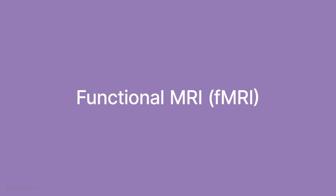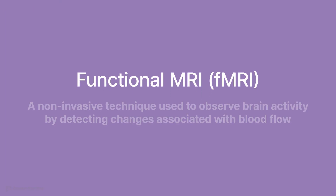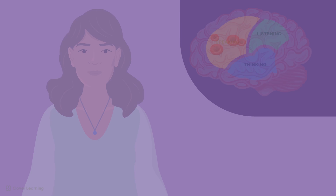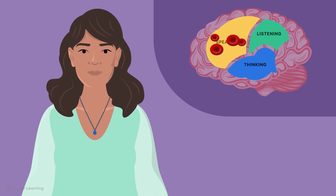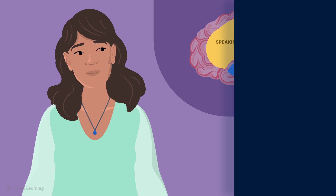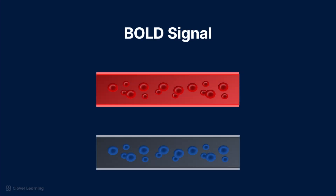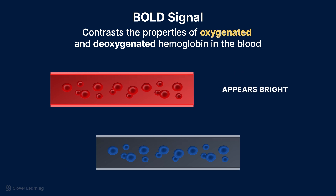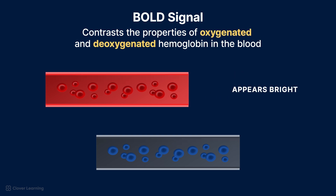In summary, functional MRI, or fMRI, is a non-invasive imaging technique used to observe brain activity by detecting changes associated with blood flow. This method relies on the fact that when an area of the brain is in use, blood flow to that region increases. The primary contrast mechanism in fMRI is based on the blood oxygenation level dependent, or BOLD, signal. This signal contrasts the properties of oxygenated hemoglobin, which will appear bright, and deoxygenated hemoglobin, which will appear dark.